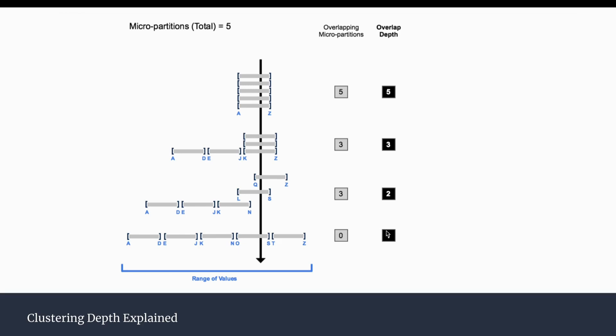The best case is when there is no overlapping between micro partitions and the overall depth is 1. For example, if a query filters for values between T and Z, the remaining 4 micro partitions can be eliminated at the metadata layer, and only 1 micro partition is read. This is how Snowflake returns data quickly. When you define a clustering key, Snowflake distributes the data and lowers the overall clustering depth for that column.